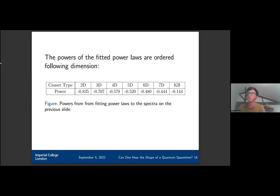The K order is an outlier with a much smaller power. So the spectrum might allow us to determine both the dimension and the manifold-likeness of the causal set.